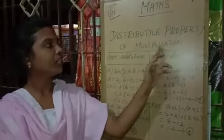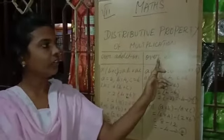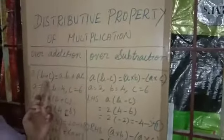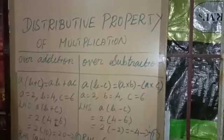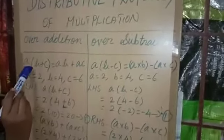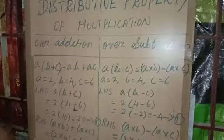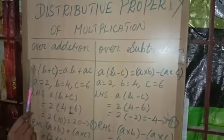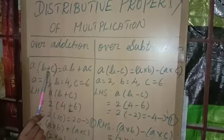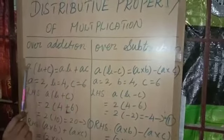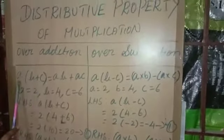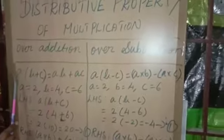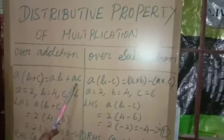Distributed Property of Multiplication over Addition and over Subtraction. This is the Distributed Property form for Addition, and this for Subtraction. A into B plus C is equal to AB plus AC — just multiply A with the inside. A into B plus C equals A into B plus A into C.